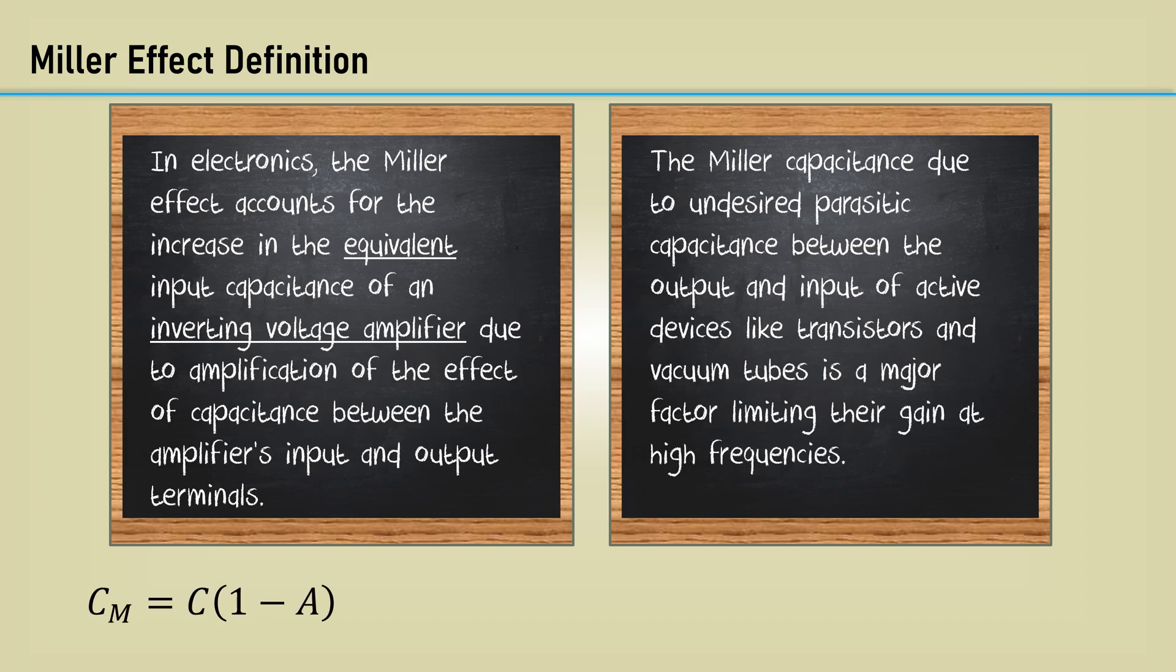Here's the equation for the Miller effect. C is the parasitic capacitance between the output and input of the device, and A is the amplifier gain. Since this only occurs for inverting amplifiers, the gain is always negative. For instance, for the gain of minus 50, the Miller capacitance would be 51 times the parasitic capacitance from the output to the input. The equation is a bit counterintuitive at first. To understand it, we need to derive it.